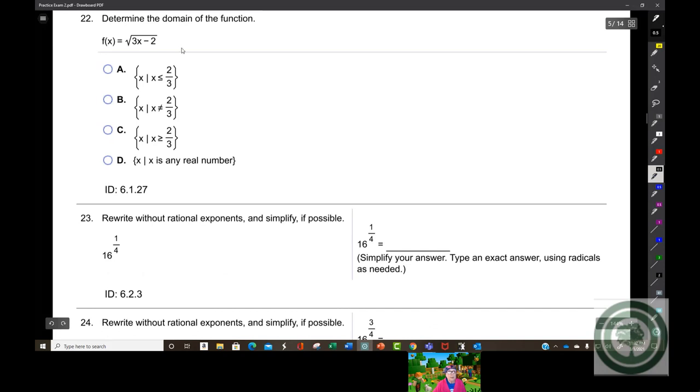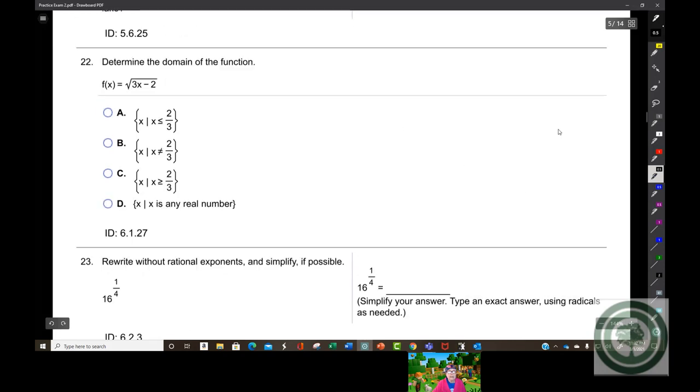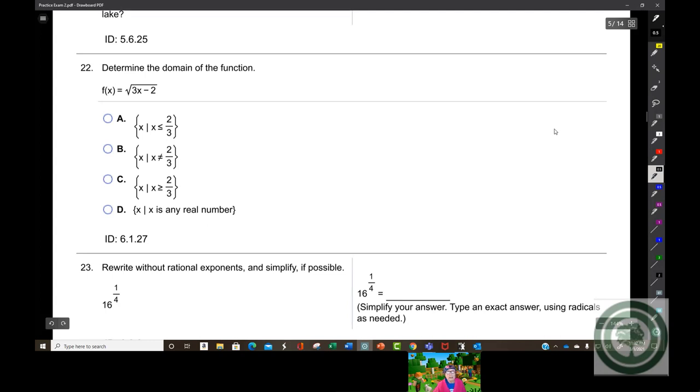This is new. We're being asked to find the domain. This is how you always find the domain of a square root. Take out the radicand, 3x minus 2, set it greater than or equal to 0. So there's a hint automatically. You're going to have a greater than or equal to in your answer.